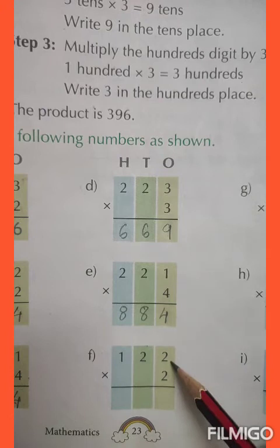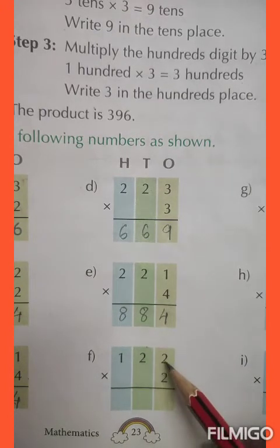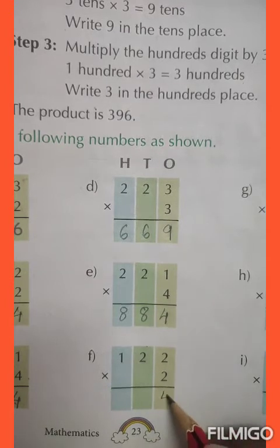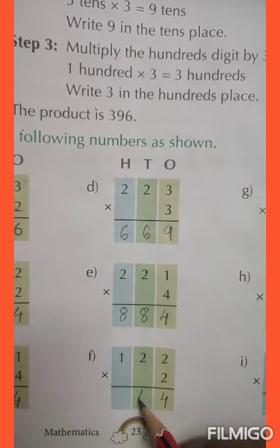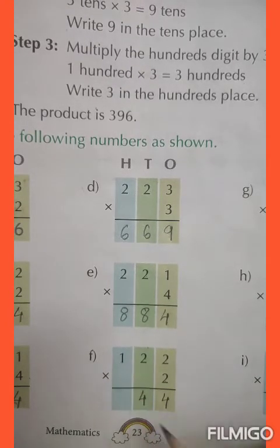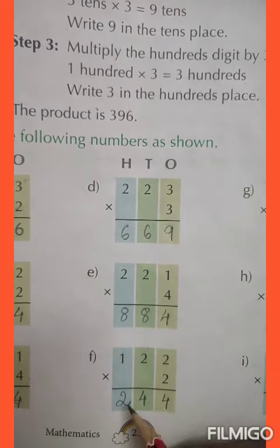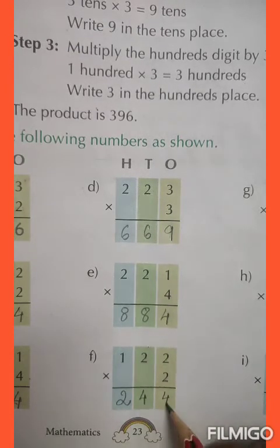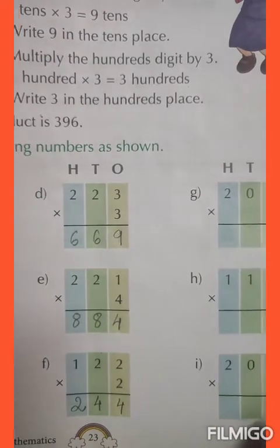122 by 2. So, 2 twos are 4, 2 twos are 4, 2 ones are 2. So, 244 is the answer. It is easy, isn't it?